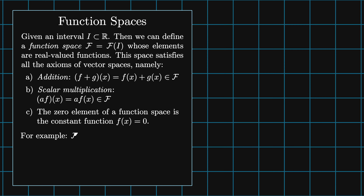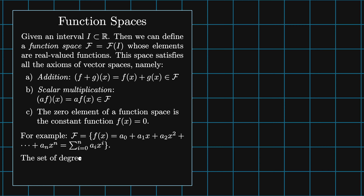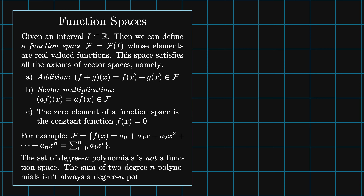An example of a function space is f, whose elements are the functions a0 plus a1 times x plus a2 times x squared, and so on through an times x to the n. Note, we shouldn't confuse this with the set of degree n polynomials, since the sum of two degree n polynomials isn't necessarily a degree n polynomial. Instead, we call this the set of polynomials of degree less than or equal to n.